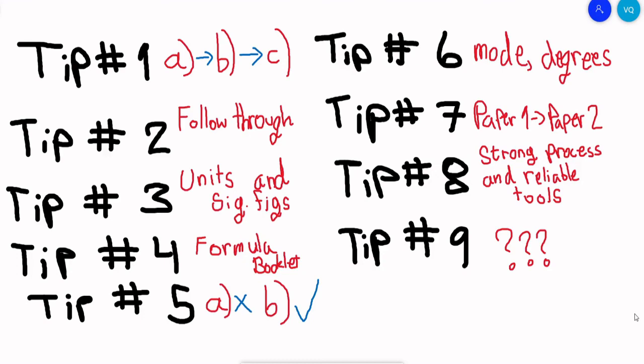Tip number seven: you will do paper one before paper two, so if something was not asked in paper one it will probably show up in paper two.